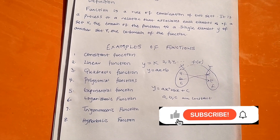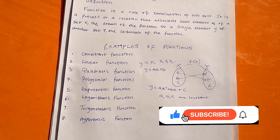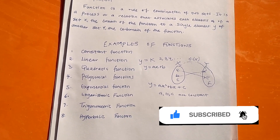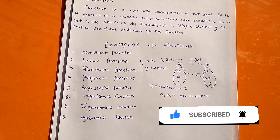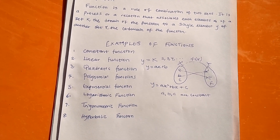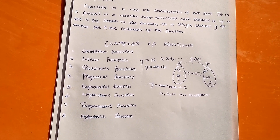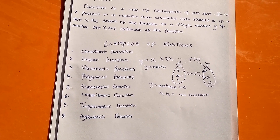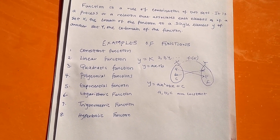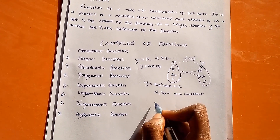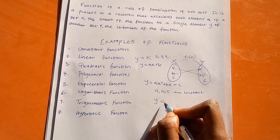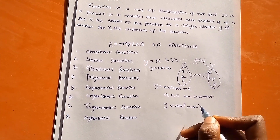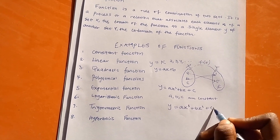Number four is the polynomial function. This is any function where the power of the variable x is more than two — for instance, x raised to power three, x raised to power four, and so on. It is usually given as y equals ax cubed plus bx squared plus cx plus a constant, and that is how a polynomial function looks.